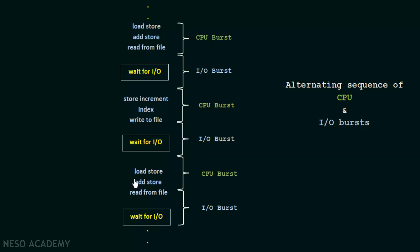Moving forward, there are again operations like load, store, add, store, and read from file — similar to the first set — which require the CPU, so this is again a CPU burst. Then it is again waiting for some IO operation to complete, which is the IO burst. This pattern continues until the process is terminated. When the process is going to be terminated, there will be a final CPU burst in which the system requests termination. Once that is completed, the CPU and IO burst cycle for that particular process is finished.